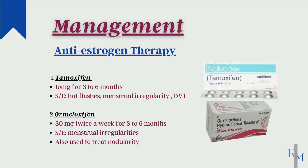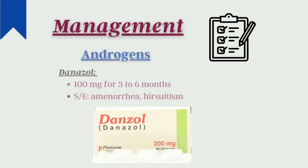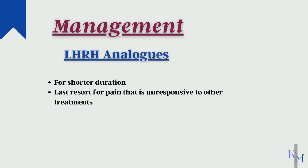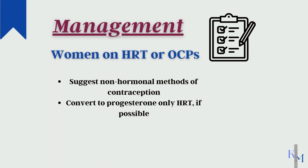Ormeloxifene may also be used for 3 to 4 months at a dose of 30 mg twice a week. Danazol is an androgen; its dose is usually 100 mg twice a day for 3 to 6 months, with side effects including amenorrhea, weight gain, and menstrual irregularities. Luteinizing hormone-releasing hormone agonists may be used for a shorter duration for pain unresponsive to other treatments. Recent studies have found that HRT and oral contraceptives may also be related to mastalgia; in such cases, advise non-hormonal contraceptives and stop HRT or convert to progesterone-only therapy if possible.